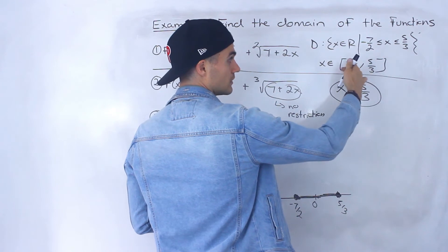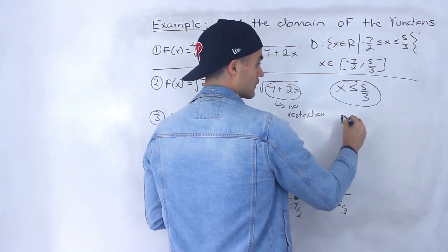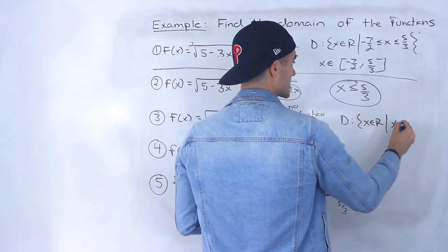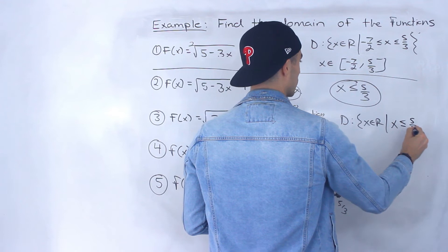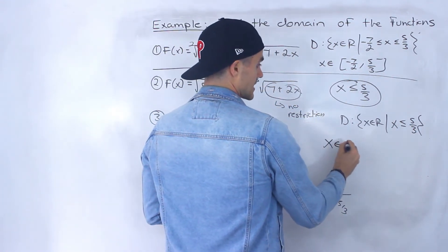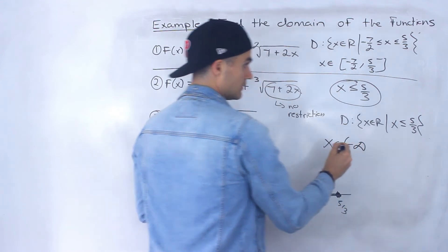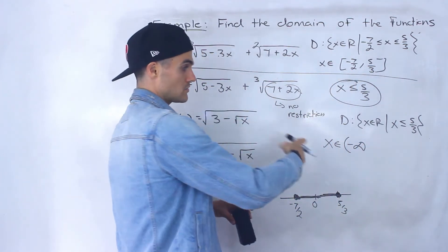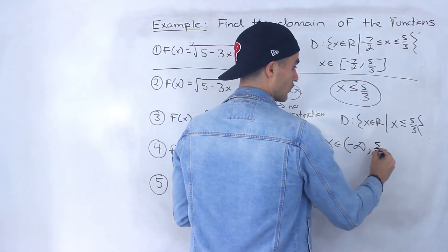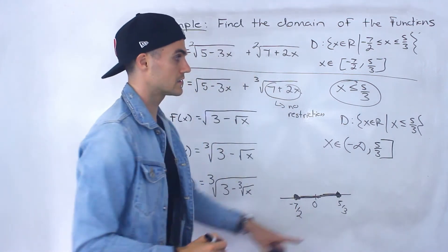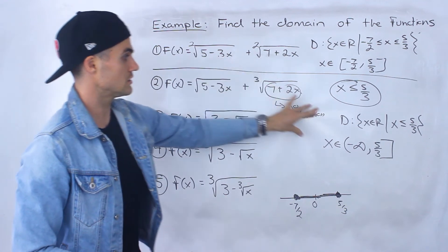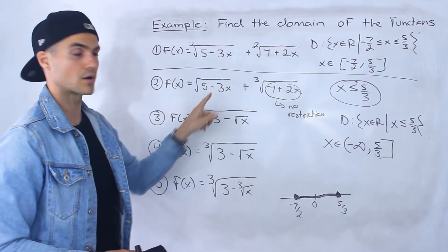So the domain for function two is x ∈ ℝ where x has to be less than or equal to five over three. In interval notation, x is an element from negative infinity to five over three with a square bracket, because it's inclusive of five over three. That's the domain for number two.